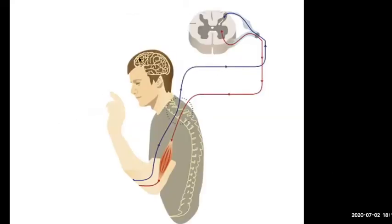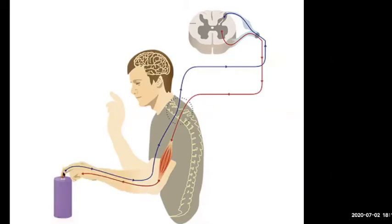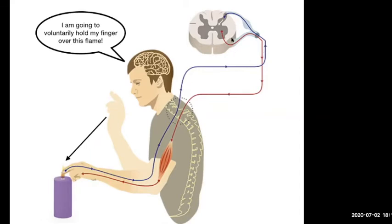So that means this guy here — here's his brain. He's got a thought in his brain and he wants to move his hand down for some reason. So that thought is generated, electrical signals are generated, it goes down into his spinal cord, it reaches the spinal cord here to this red motor neuron. And then that electrical signal is going to go out and activate that muscle. In this case, he wants to put his hand on a flame, and his brain is making him do that voluntarily. So it's going down there and he's got this willpower to keep it there — so it's all voluntary.